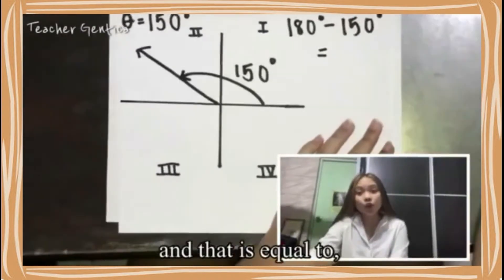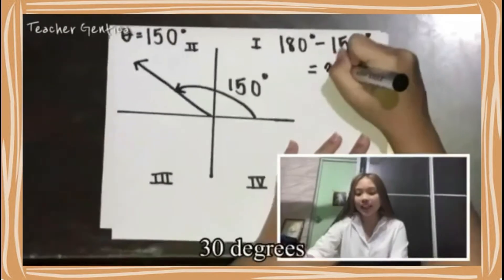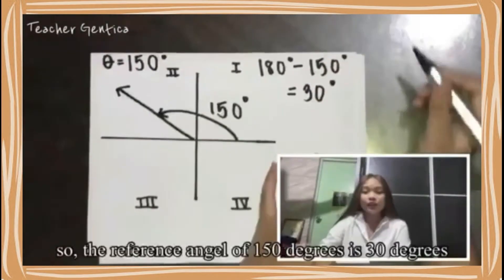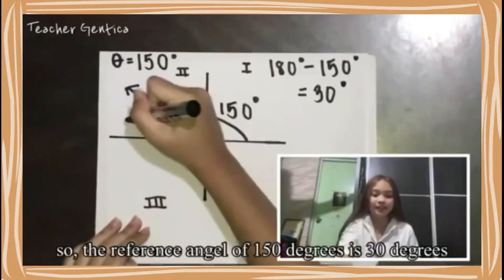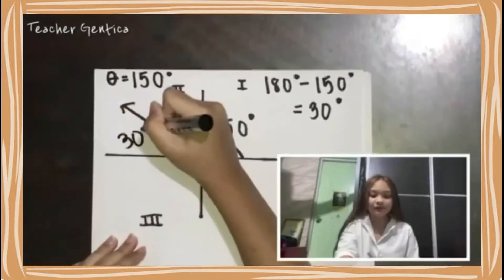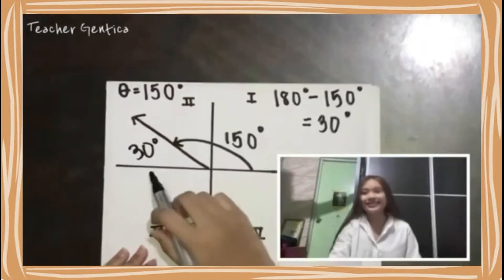And that is equal to, of course, 30 degrees. So the reference angle of 150 is 30 degrees. 30 is between the negative x-axis and the terminal ray.